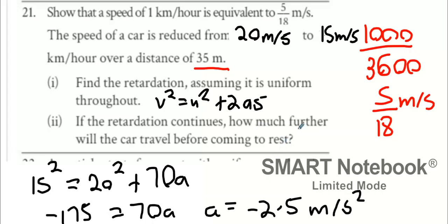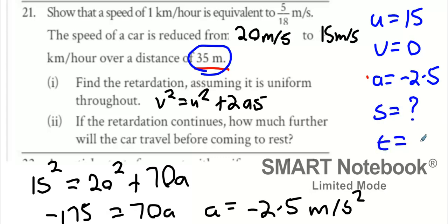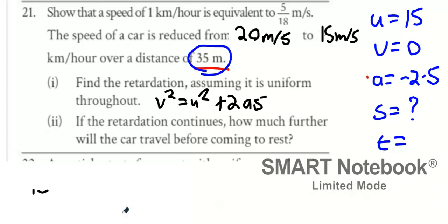If this continues, how much further will the car travel before coming to rest? What we're going to do is start it off. What do you think my u value should be? 15 or 20? How much further after the initial 35 meters? Start off at 15. Your v value? Your a value? Minus 2.5. Your s value is what we're after. So what can we do here? I think we can use v squared equals u squared plus 2as again.